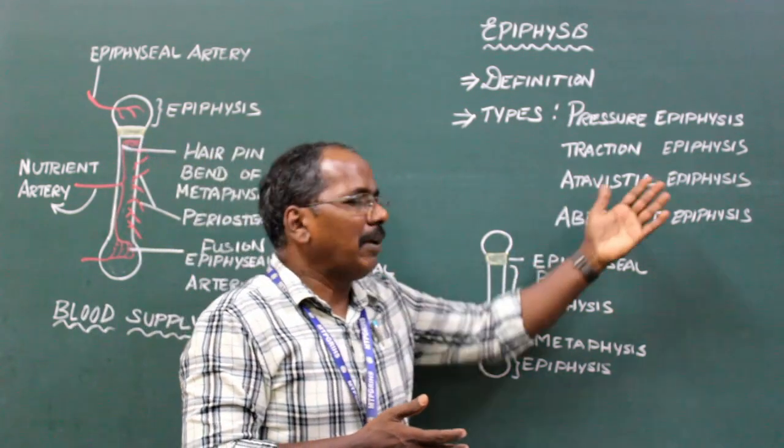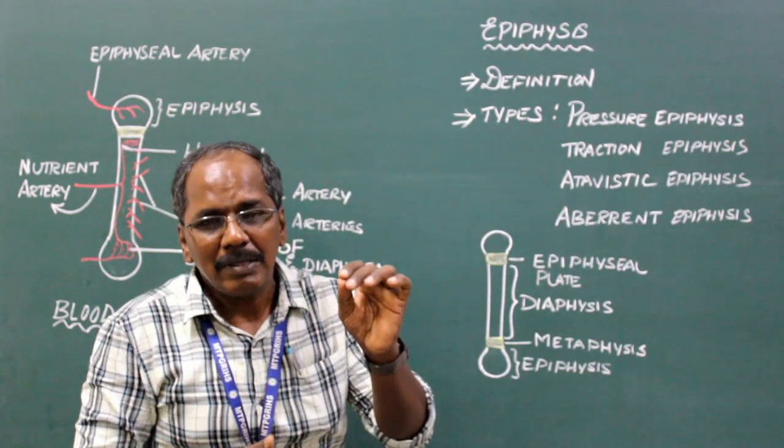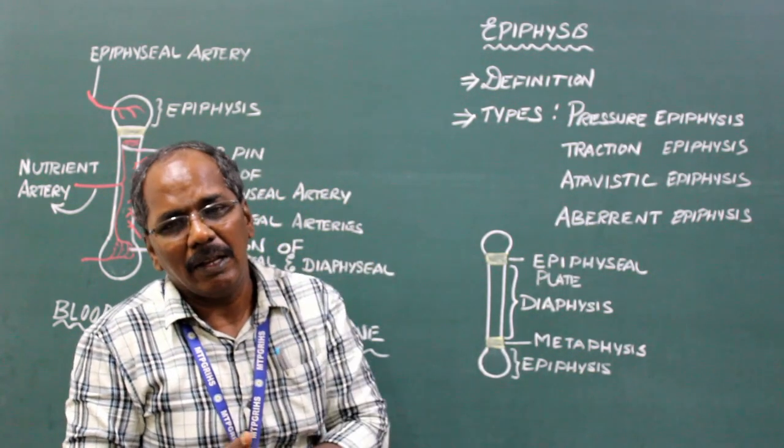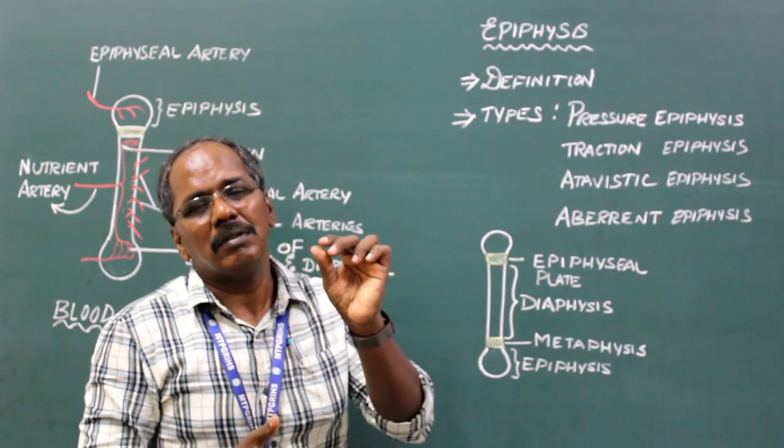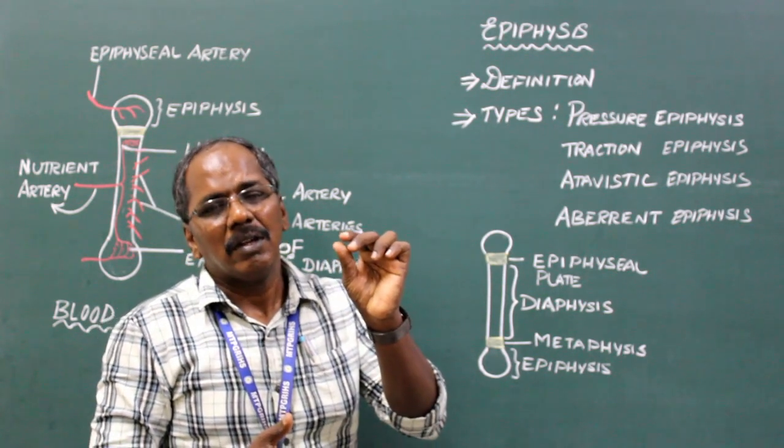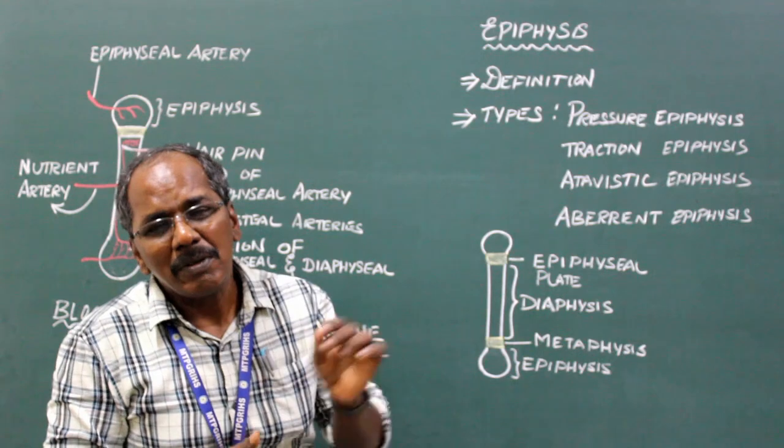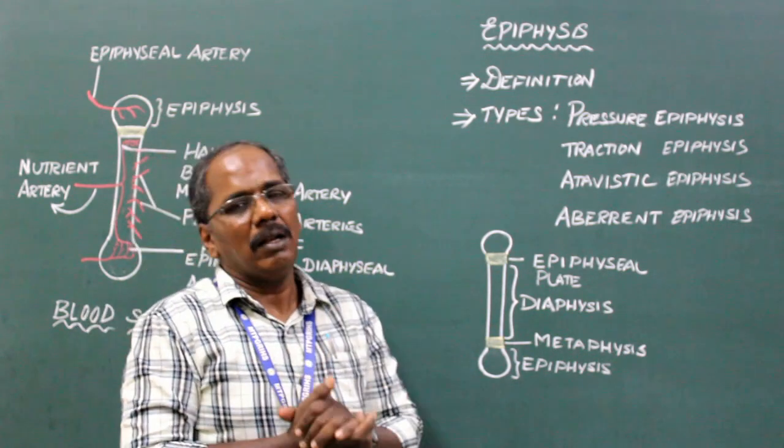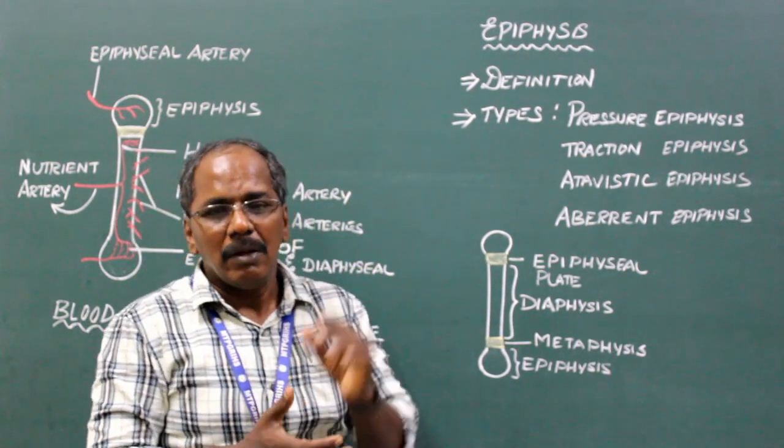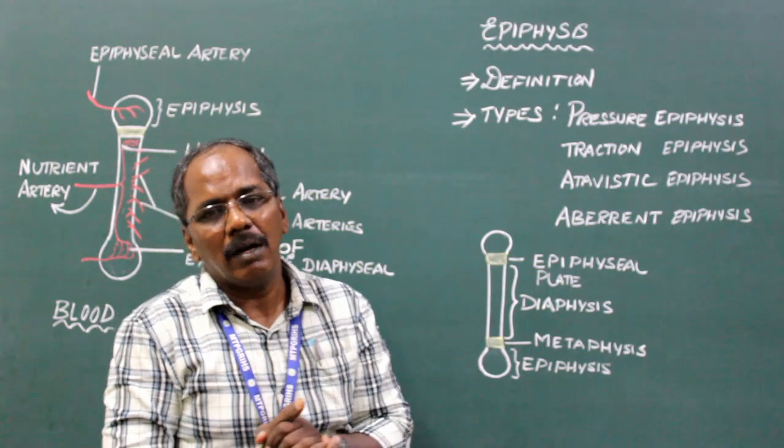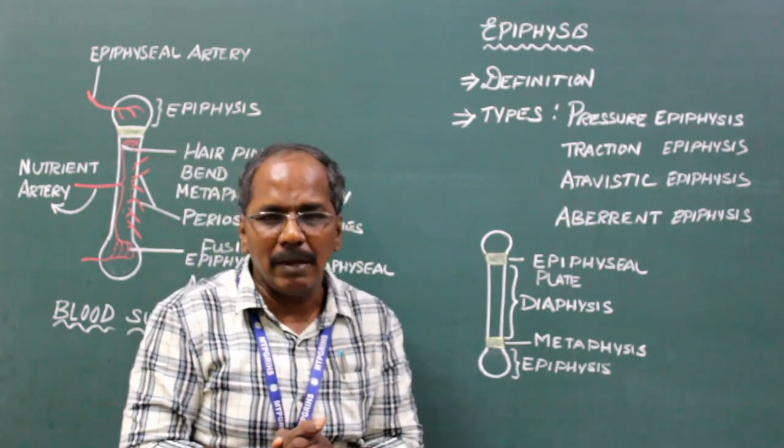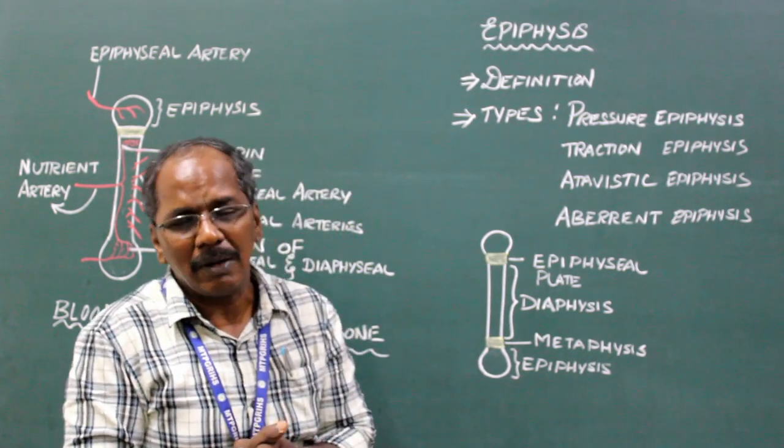Atavistic Epiphysis. It represents phylogenetically an individual bone which is fused to another bone in humans. Examples: Coracoid process of scapula, and os trigonum or lateral tubercle of talus.